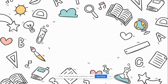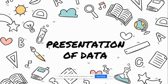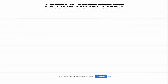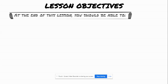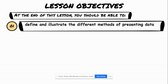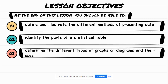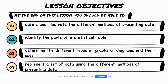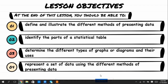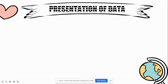Good day. Our lesson for today is Presentation of Data. Let me give you first the lesson objectives. At the end of this lesson, you should be able to: define and illustrate the different methods of presenting data, identify the parts of a statistical table, determine the different types of graphs or diagrams and their uses, and represent a set of data using the different methods of presenting data.